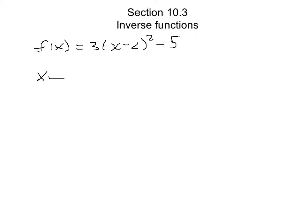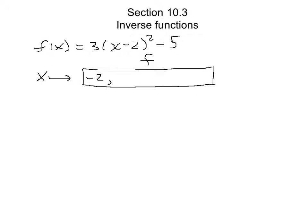We think about x coming into a machine called f. The first thing that happens — think about your order of operations — is minus 2 gets subtracted. The next thing is x minus 2 gets squared. Then we multiply by 3, and finally we subtract 5, and that gives us f of x. The order of operations is really important.